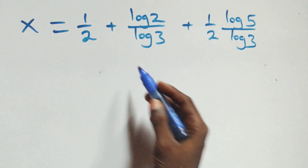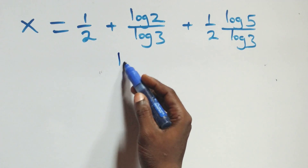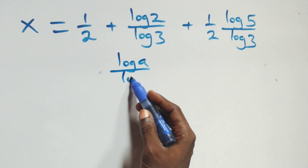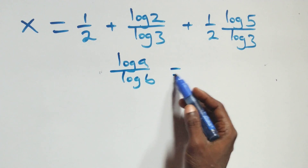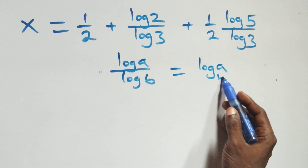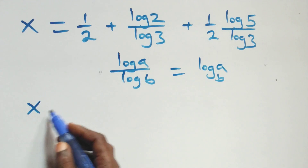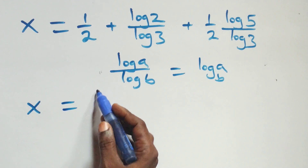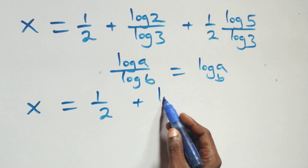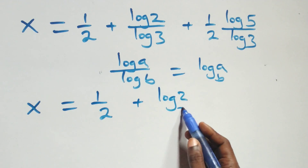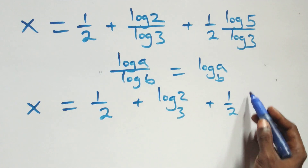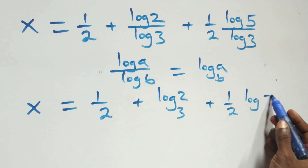We apply the change of base formula: log a over log b is the same as log a to base b. So x equals one half plus log 2 base 3, plus one half times log 5 base 3.